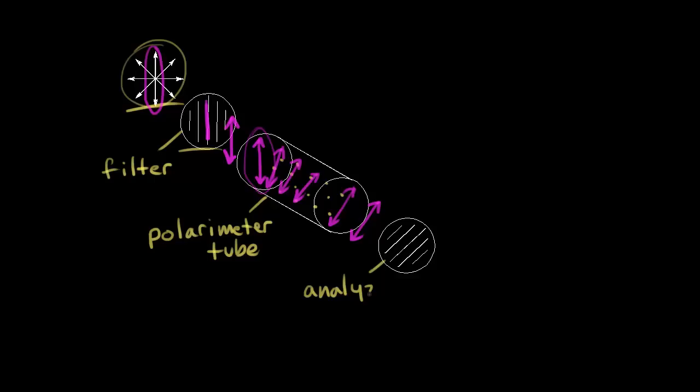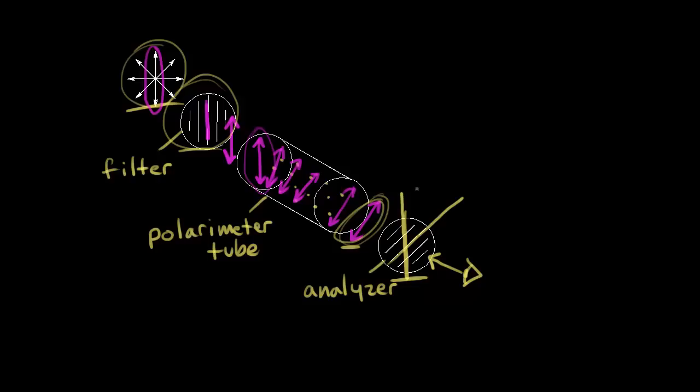Next we have the analyzer portion. Imagine that your eye is here looking at the analyzer. The analyzer started off with the slits up and down, just like we had on the filter. But that wouldn't allow this plane of light to pass through, so we would have to rotate the analyzer to allow our plane of light to pass through. This angle — alpha — is called the observed rotation.